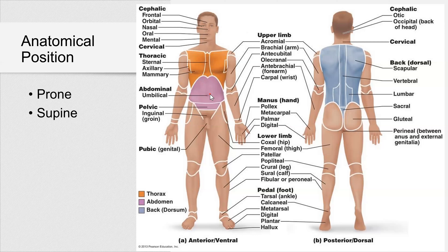The abdominal region includes umbilical. You have the pelvic region, inguinal, and pubic. The inguinal region is more like this line — you have an inguinal canal — rather than just below the pelvis. On the back side, you have vertebral, lumbar, and scapular. The scapular region is where the scapula bone is. Also sacral, right here. On the posterior trunk we also have vertebral and lumbar regions.